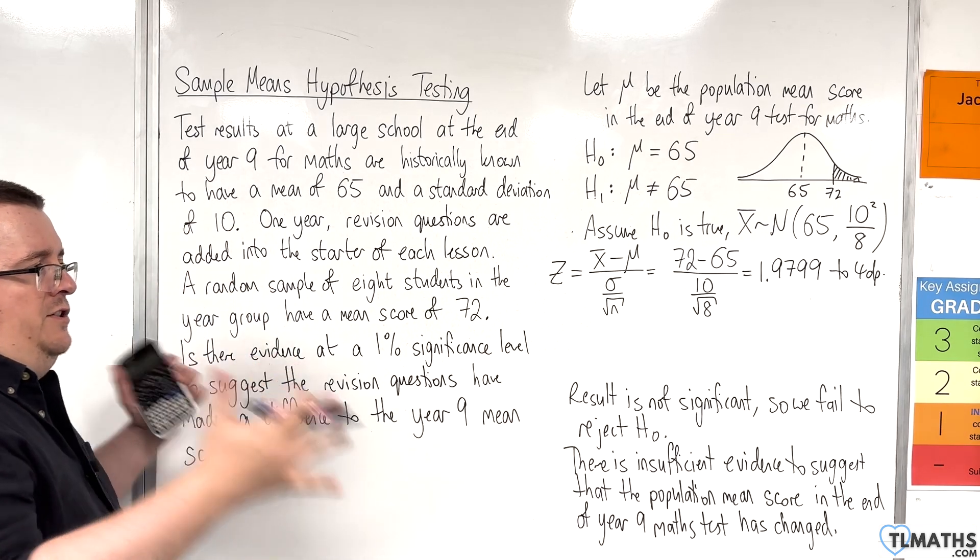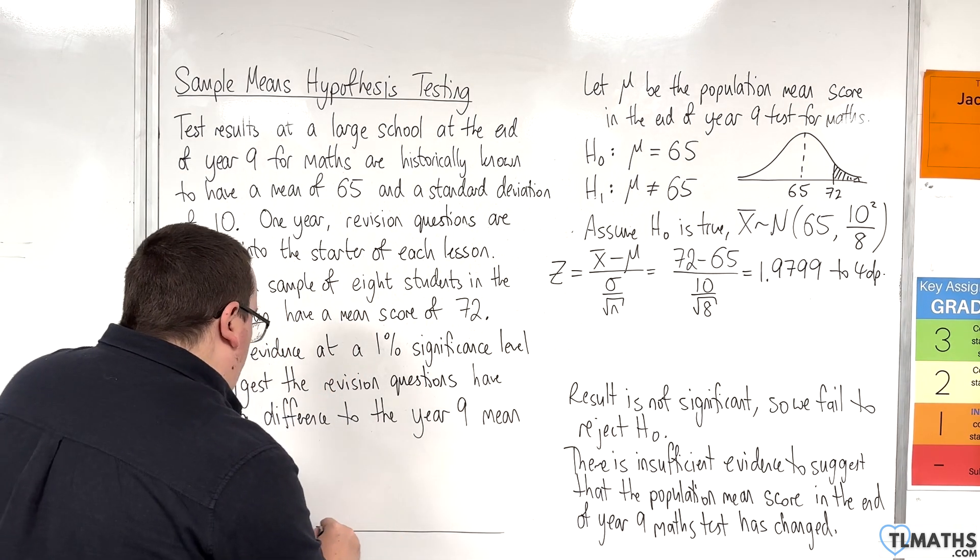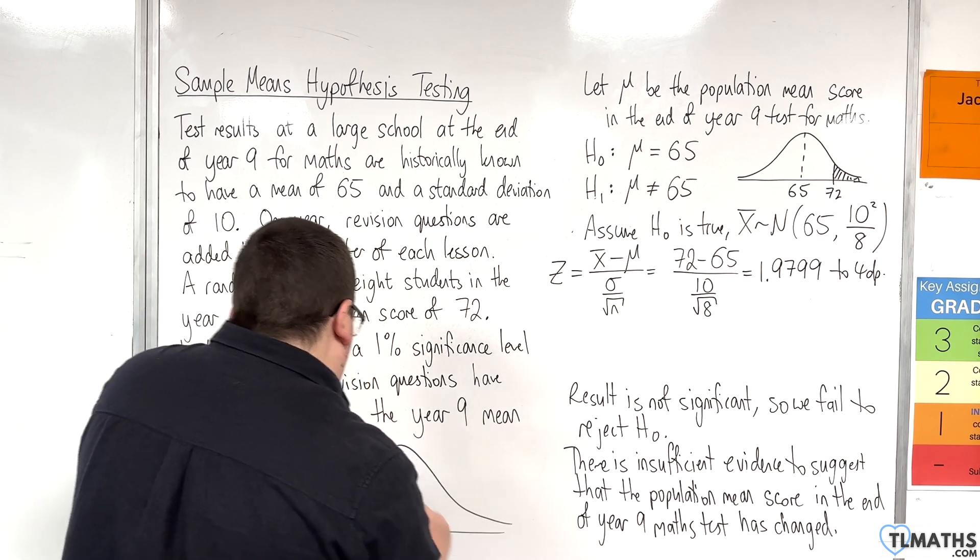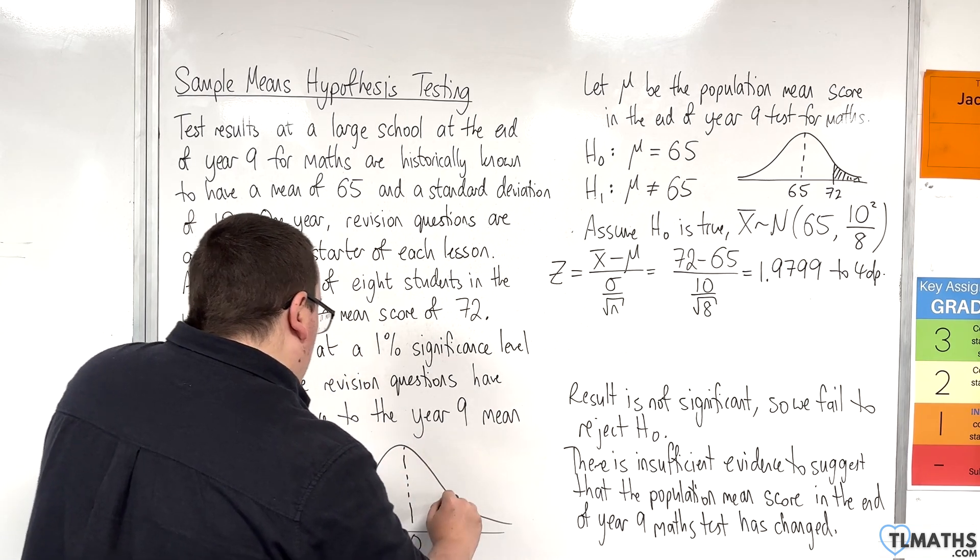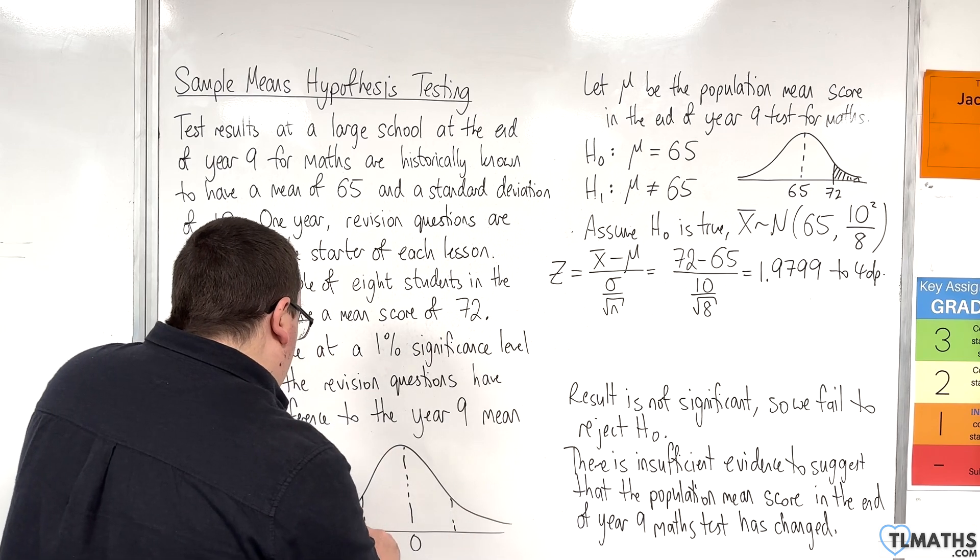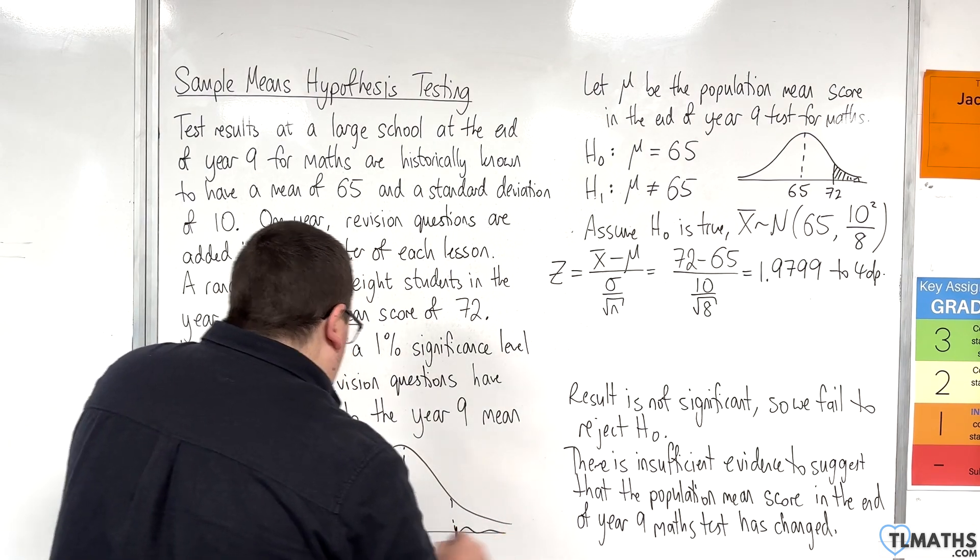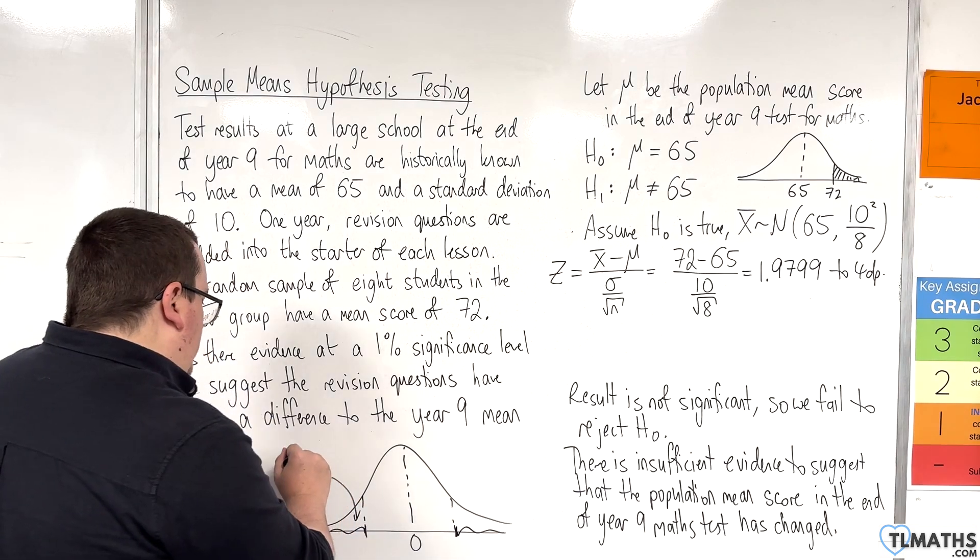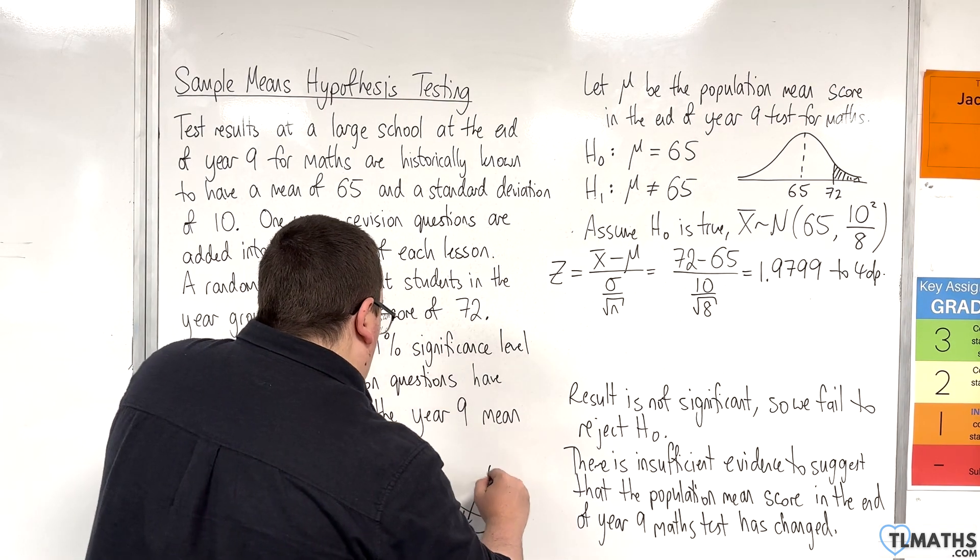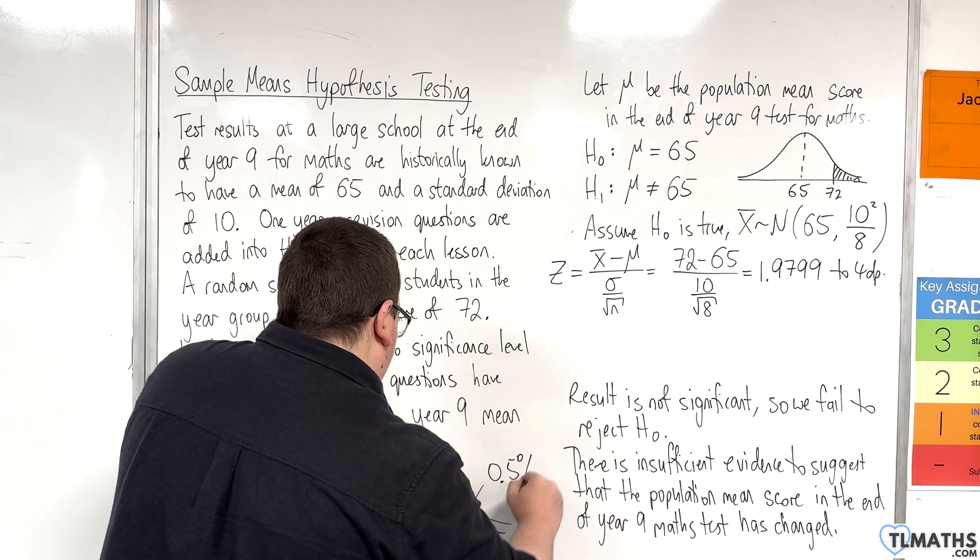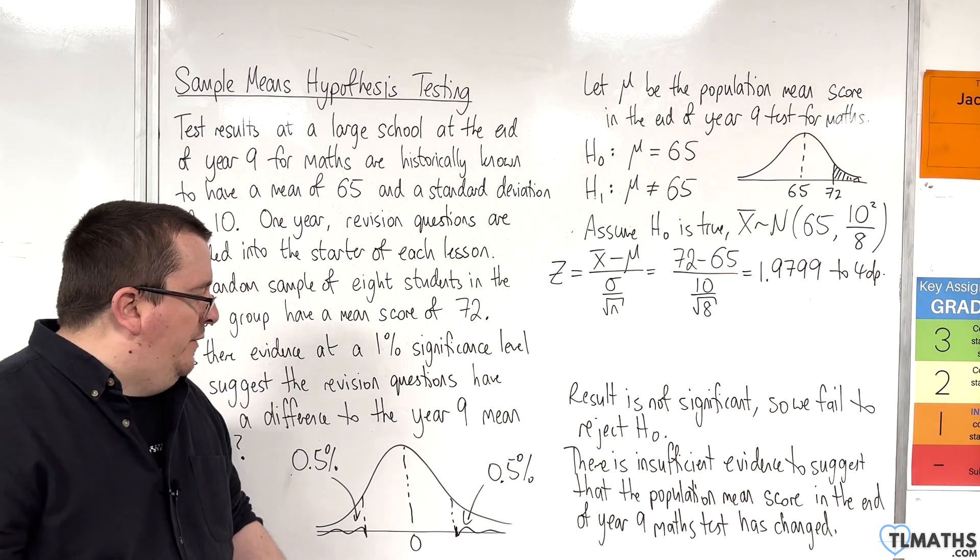Now, we need to find our two values. Because it's a two-tail test, there are two values. Here is my standard normal distribution. Here's 0. And I am interested in these two values here because that's going to be 0.5% and that's going to be 0.5%. Essentially I'm looking for my critical values.